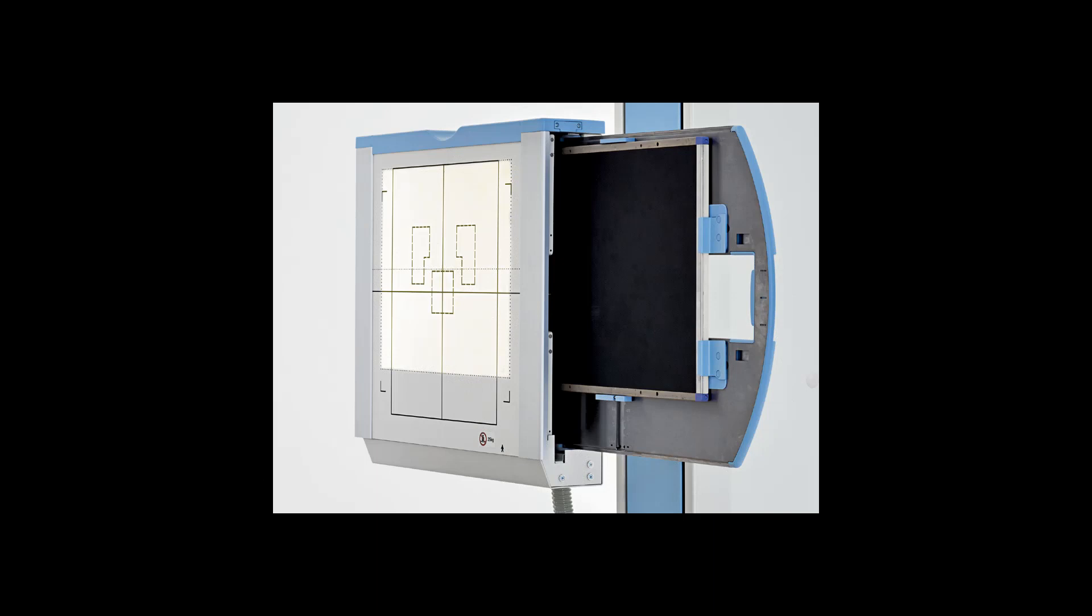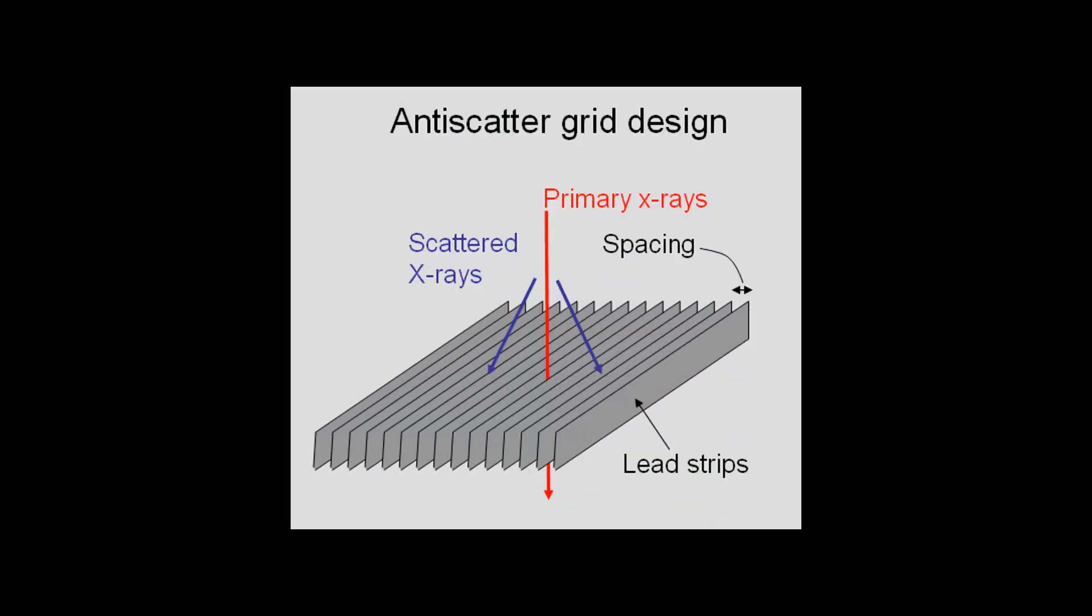When the x-rays pass through the patient, through the grid, and then finally to the cassette, the scatter radiation is blocked out. Not 100%, but they are significantly diminished. Let's look at how this happens.